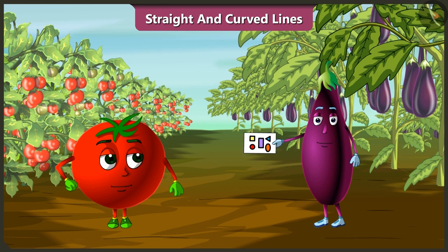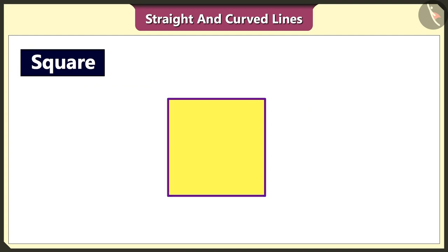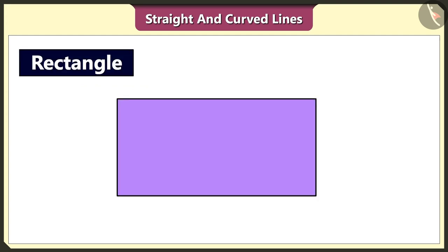show me. Look, this square is made using these four straight lines of same length. This rectangle is also made using straight lines.